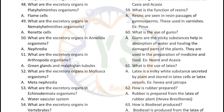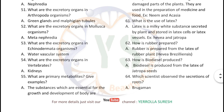What are the excretory organs in Annelida? Nephridia. What are the excretory organs in Arthropoda? Green glands and Malpighian tubules. What are the excretory organs in Mollusca? Metanephridia. What are the excretory organs in Echinodermata? Water vascular system. What are the excretory organs in vertebrates? Kidneys.